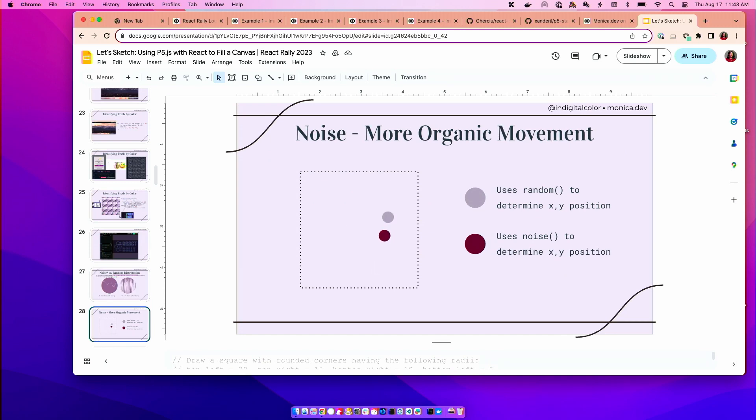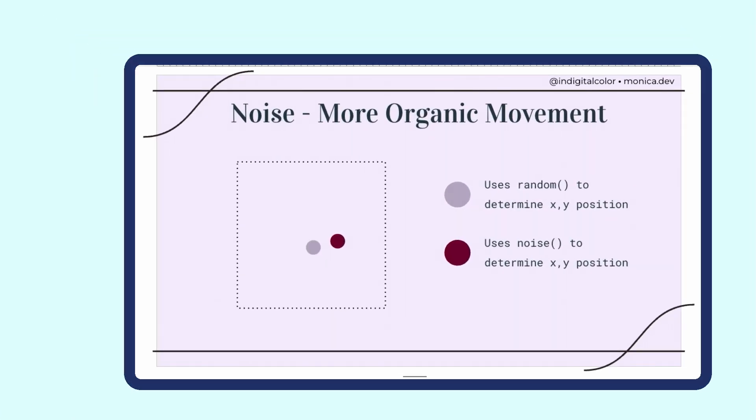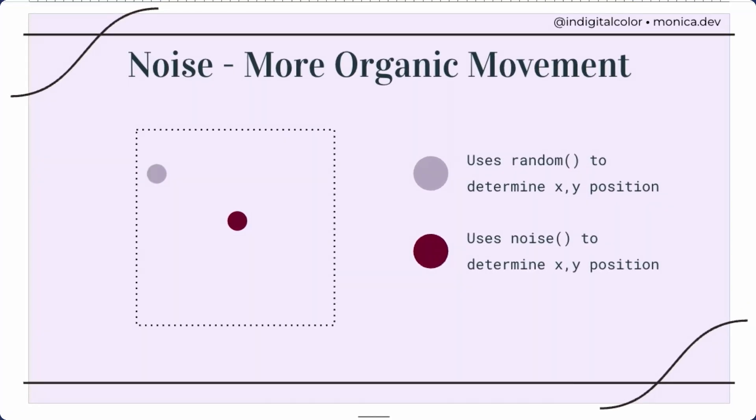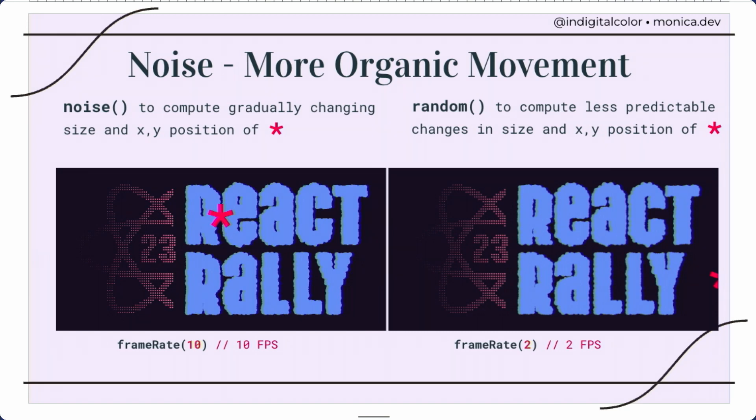But then this is a different way to visualize noise. So with the random, the ball is going all over the place. And with the noise, it's just gliding through the frame. So depending on what type of effect you're interested in, one may be better suited than the other. And I also showed or compared how to use noise, or what noise versus random looks like in our graphic.